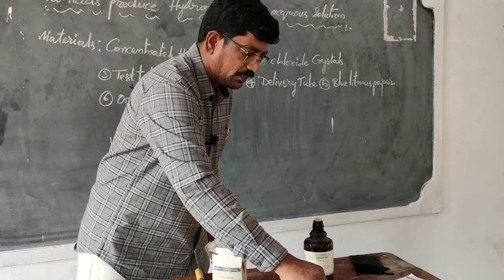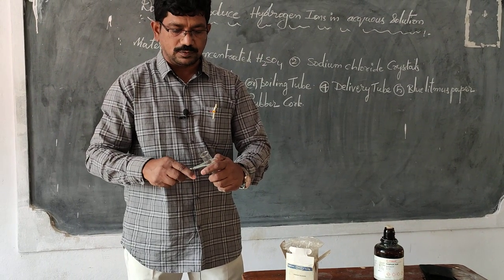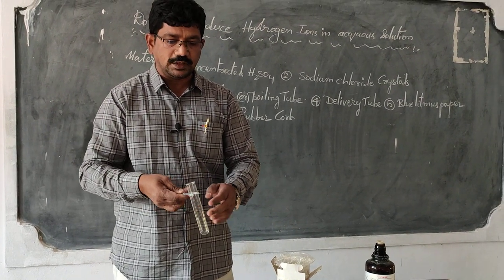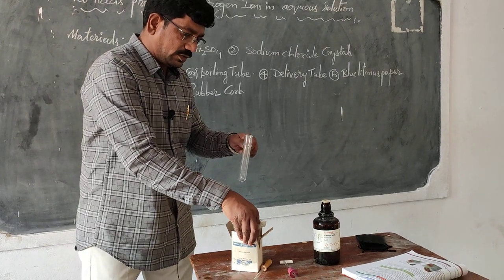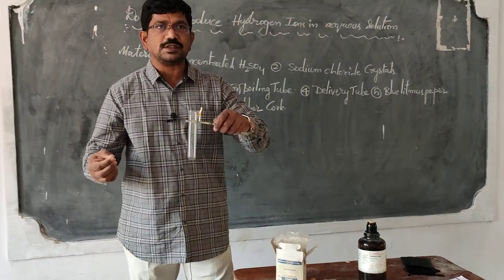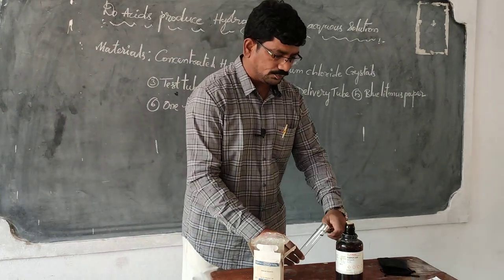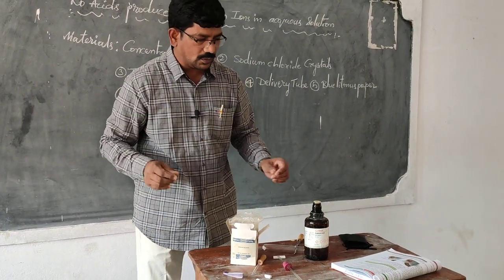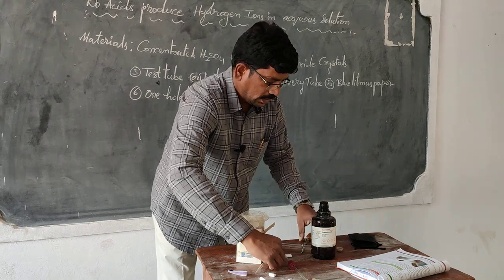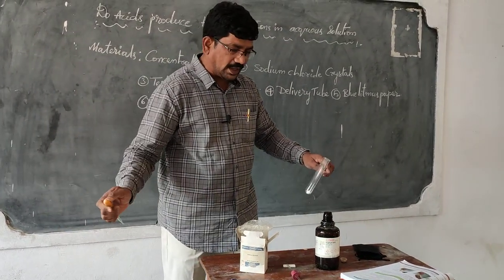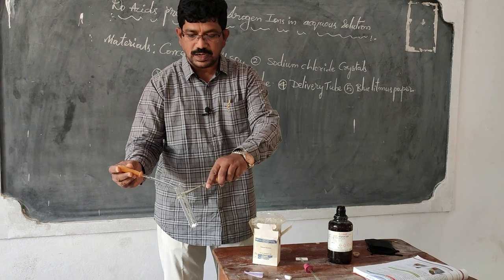Now, what is the procedure we are going to follow? First, take the test tube and hold it with the test tube holder. Take a few crystals of sodium chloride and place them in the test tube. Now I am adding a few drops of concentrated sulfuric acid.